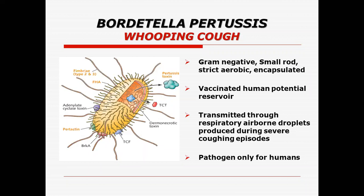Vaccinated humans are a potential reservoir for Bordetella pertussis, and transmission of the disease is through respiratory airborne droplets. These droplets are generated through coughing episodes of individuals who are already suffering from this disease, although they have taken vaccines. The pathogen is specific only to humans; animals are not prone to this infection.